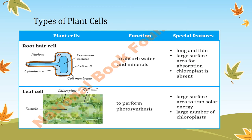Now the types of plant cells. The first type is root hair cells — they are long and thin with a large surface area so that they can absorb more water and salts. They do not have any chloroplasts and their function is to absorb water and minerals from the soil.